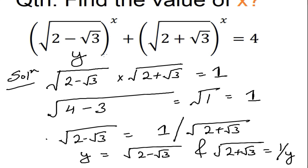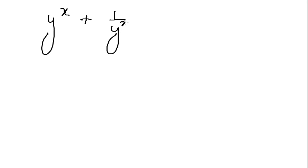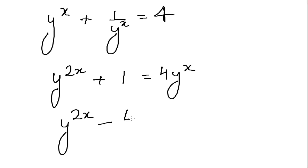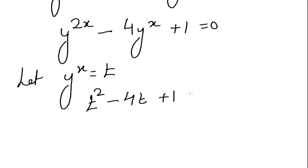Substituting, we get y^x + (1/y)^x = 4, which gives y^(2x) + 1 = 4·y^x. Rearranging: y^(2x) − 4·y^x + 1 = 0. Now let t = y^x, so this becomes t² − 4t + 1 = 0.